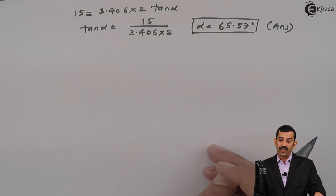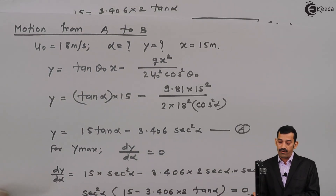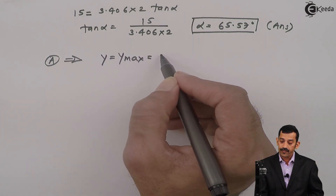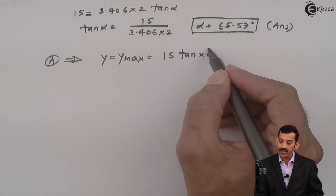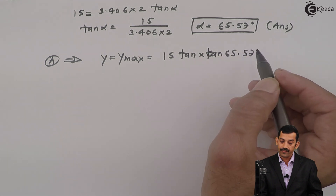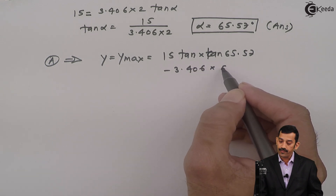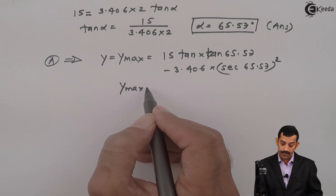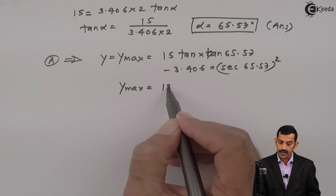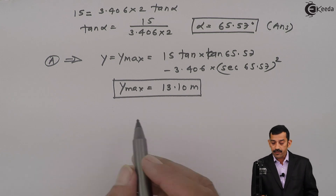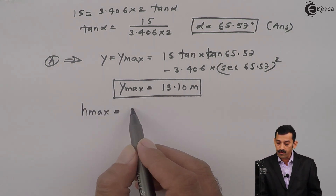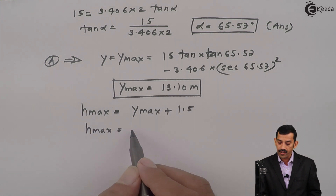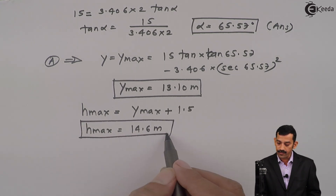Substituting alpha = 65.57° into Equation A: Y_max = 15·tan(65.57°) − 3.406·sec²(65.57°). This gives Y_max = 13.10 meters. Since H_max = Y_max + 1.5 meters (height of projection above ground), H_max comes out to be 14.6 meters from the ground. This is our final answer.